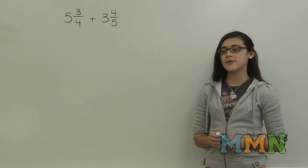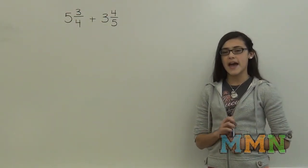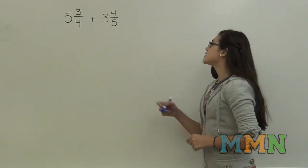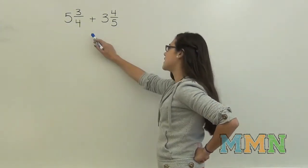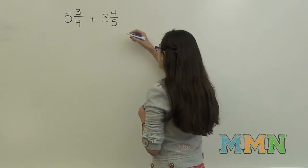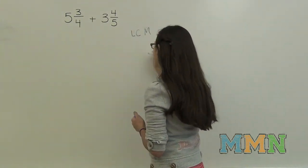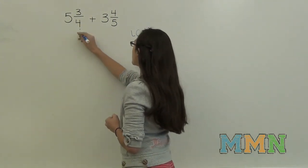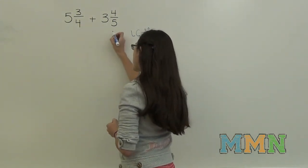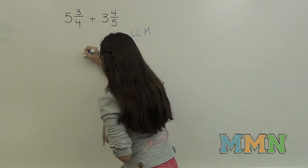Hi, I'm Alexis. Today we're going to learn how to add mixed numbers. So first we have to make the denominators the same. So we have to find the LCM, the least common multiple. So 4 times 5, the least common multiple, is 20.